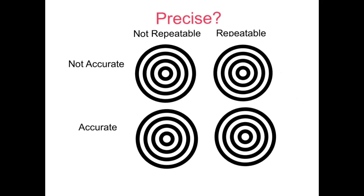Let's say that we are measuring something whose actual value is in the bullseye of that target. In this first example, I take six measurements and they land all around here. These measurements are not hitting the bullseye, so they're not very accurate. In addition, they're spread out, so they're really not repeatable.